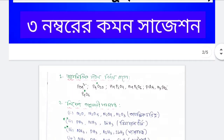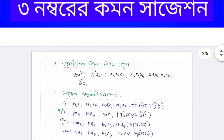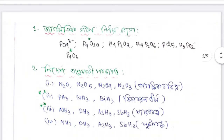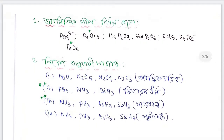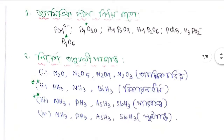Let's start. First, we will see P4O10, H4P2O7, H4P2O6, PCl5, H3PO2, and P4O6.